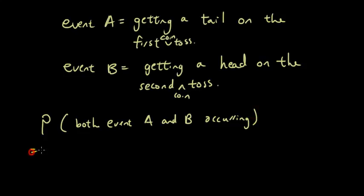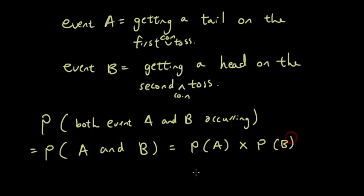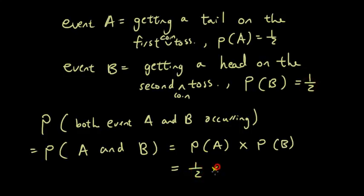So the shorthand for that is probability of A and B. So that's the probability of A times the probability of B. Probability of A is a half. Probability of B is also a half. So probability of A times the probability of B, so that's 1 fourth. So that's the answer.